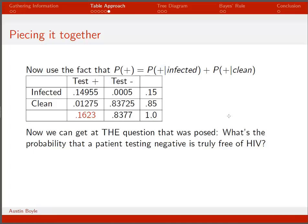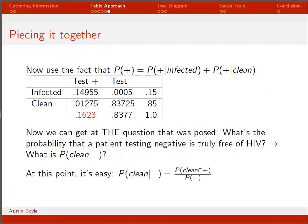Now we have all the information we need to answer the question: what's the probability that a patient testing negative is truly free of HIV? Written in math, that's the probability of being clean given a negative test. We take the intersection divided by the marginal probability of a negative test, and we get 0.9995. That is the answer to our question.